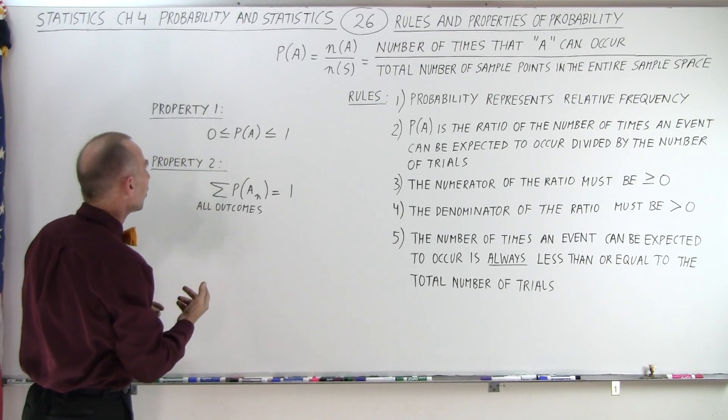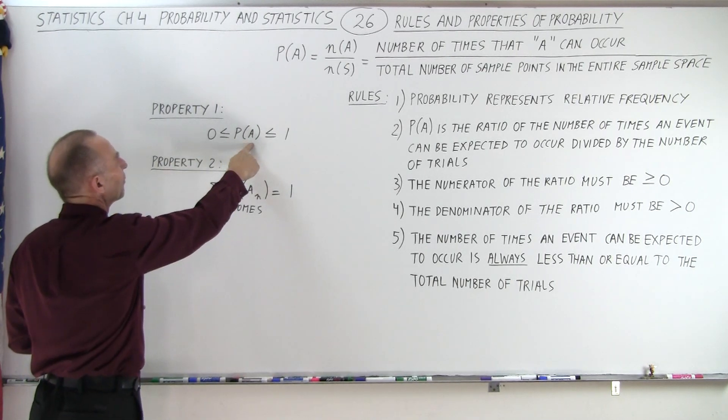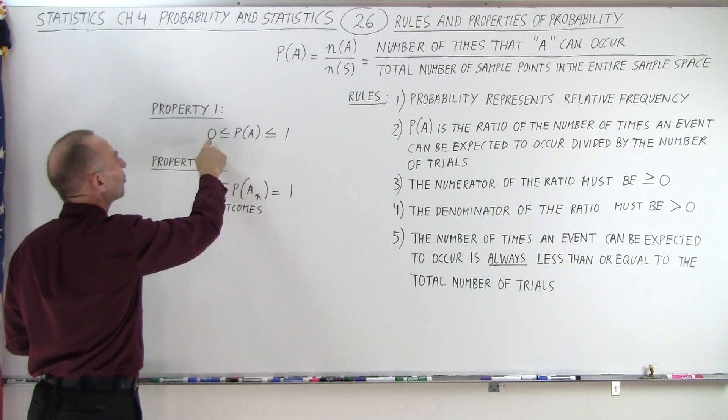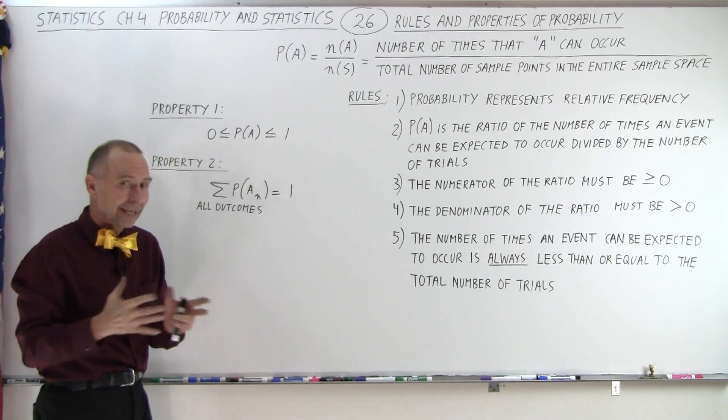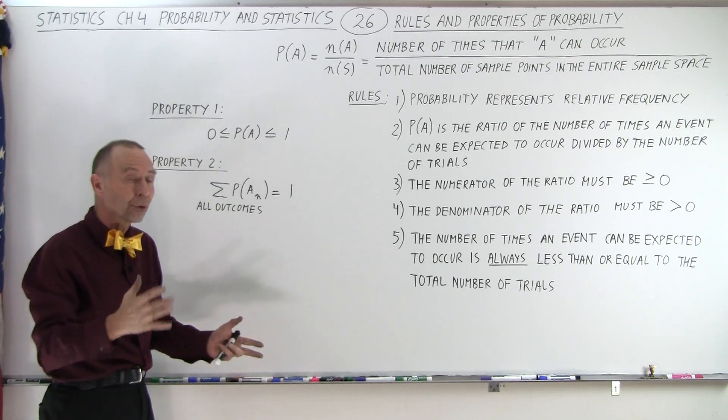We have two properties here. First of all, the probability of an event occurring will be somewhere between zero and one. It can be zero, and it can be one, anything in between, but not less than or greater than.